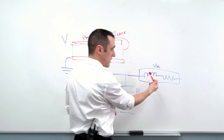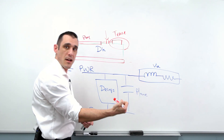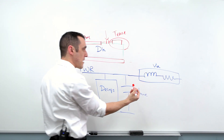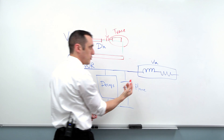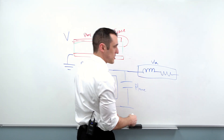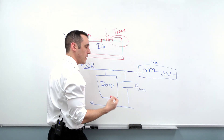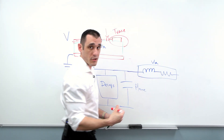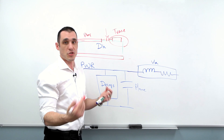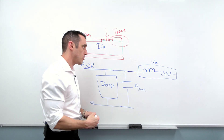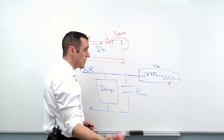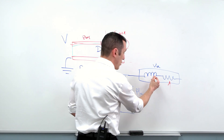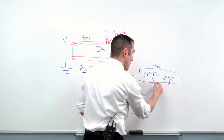Similarly, with parasitic inductances, we only care about them because they arise in series. With a via, for example — it's the perfect case. We want it to be a perfect conductor, to act like just a regular wire. The problem is it doesn't: it has some finite DC conductivity, and its structure also gives it some inductance.